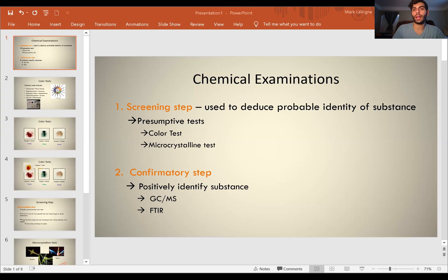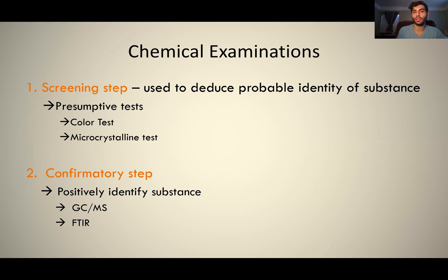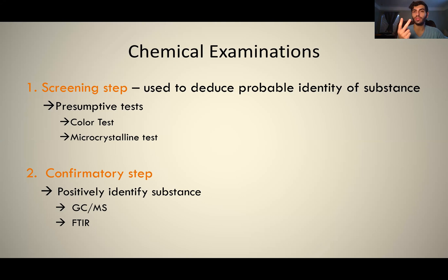If you're in my class, then you are very familiar with the fact that I break down a lot of forensic science into two steps. We have the screening step where we're determining is something present or not, and then we have the confirmatory step — meaning if it screens positive, we're going to confirm its presence using a more refined and mathematical-based technique. I'm going to talk about each step, not very in depth, but just how we go through it all from top to bottom.